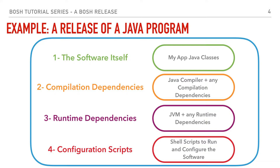Let's take an example of a Java program. Let's say we wrote a Java program and we need to package it as a BOSH release. What we need to include are the Java classes that we created, the compilation-time dependencies — so the Java compiler and any other compilation dependencies, like some other jar files. We also need to include the runtime dependencies, which will include the JVM or any other jar files. Plus, we're going to include configuration scripts that will tell BOSH how to run and compile our software.